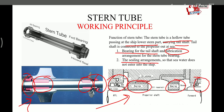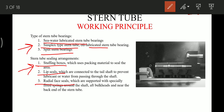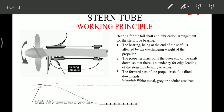There are three types of bearings used: first is the seawater lubricated stern tube bearings, then simplex type stern tube bearings which are oil lubricated, and split stern tube bearings. Similarly we have sealing arrangements: first is the stuffing box type, then we have lip seal, and the radial face sealing arrangement. In this video I'll focus on the lip seal arrangement.